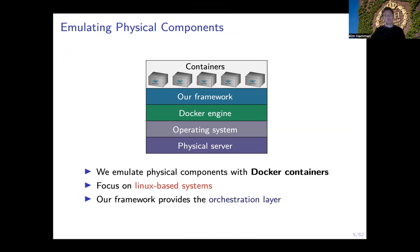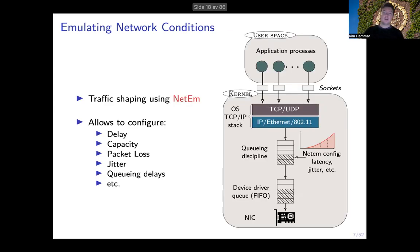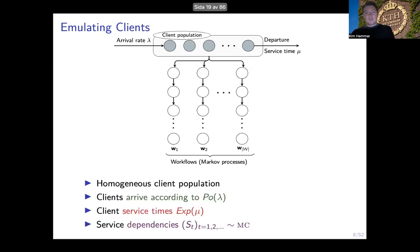Once we have created all of these containers, we emulate connectivity among the physical nodes by connecting the containers into a virtual network, which typically runs on top of a substrate IP network. We then configure this network to resemble the real network using NetEM, which allows us to configure things like packet bitrates, packet loss, delays, jitter, and packet reorderings. Once the network is configured, we emulate arrivals of clients using a Poisson process. We assume that once a client arrives it will consume one or more services for some period of time and then depart.